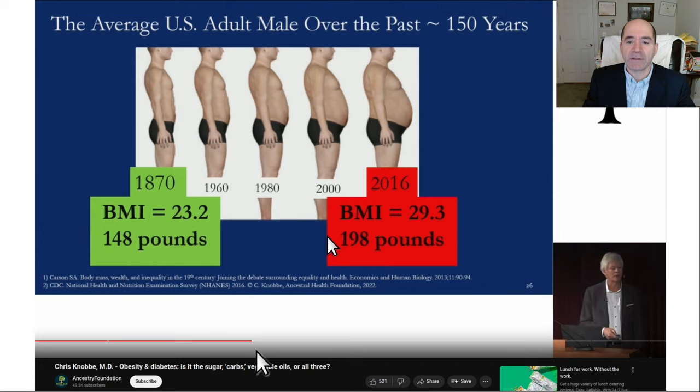The average male since 1870 has gained over 50 pounds, gone up from a BMI of 23 to 29, and these slides right here are from Chris Knob.